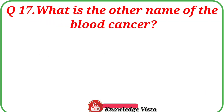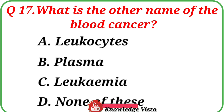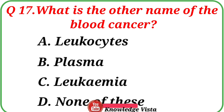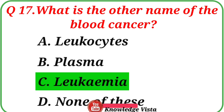Question number 17: What is the other name of blood cancer? Option A: Leukocytes. Option B: Plasma. Option C: Leukemia. Option D: None of these. The correct answer is option C, Leukemia.